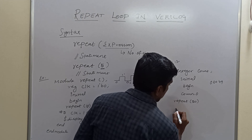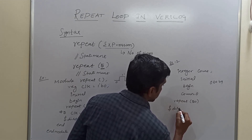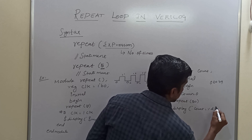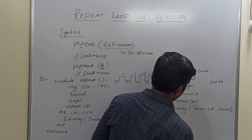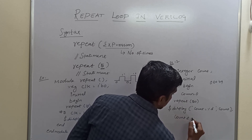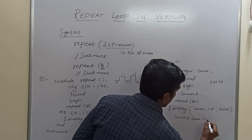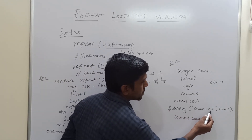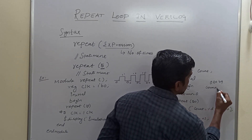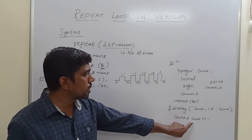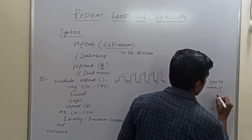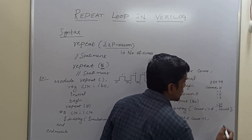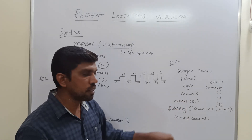Repeat the loop. Here the statement is: display count equal to percentage D, count; then count equal to count plus 1. So here we repeat the loop up to 50 and display the result. Usually the count value equals 0, then count becomes count plus 1, so now count equals 1, then 2, 3, up to 49. The final count value is 50, and once the count value reaches 50, this repeat loop will exit.